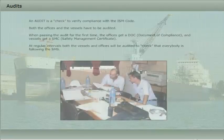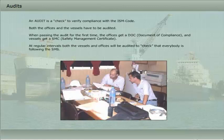An audit is a check to verify compliance with the ISM code. Both the offices and the vessels have to be audited. When passing the audit for the first time, the offices get a document of compliance and vessels get a safety management certificate. At regular intervals, both the vessels and offices will be audited to check that everybody is following the safety management system.